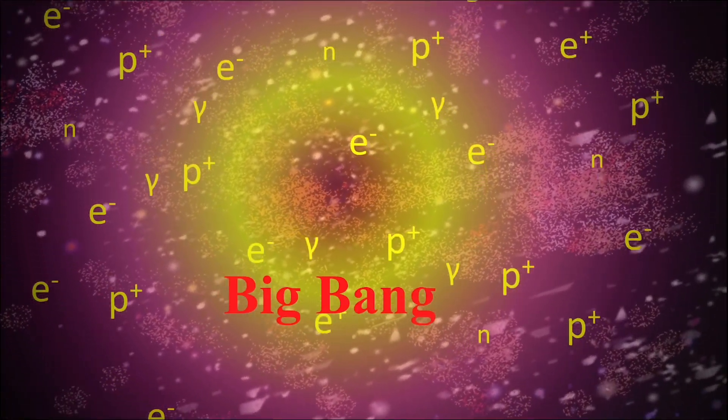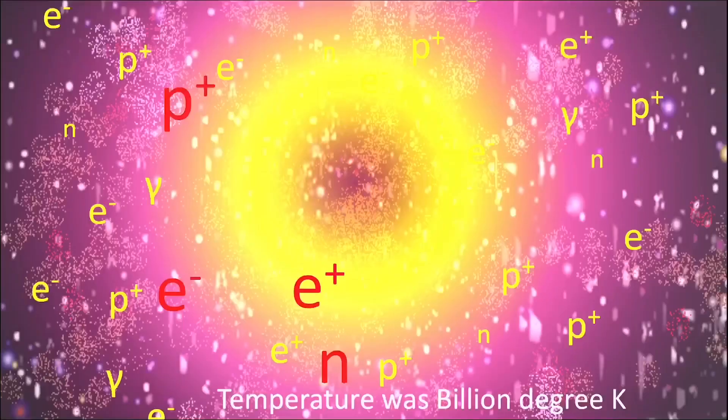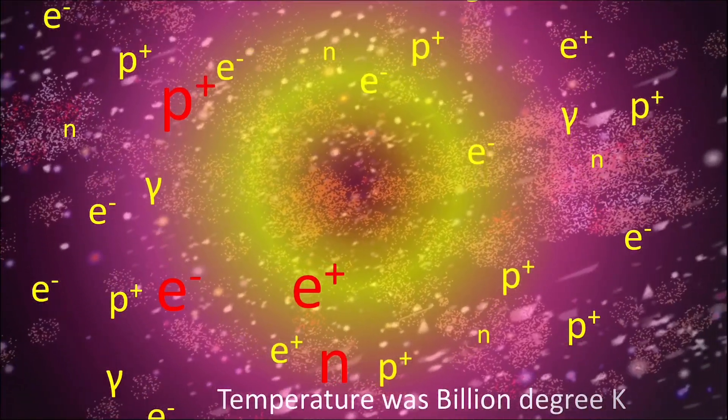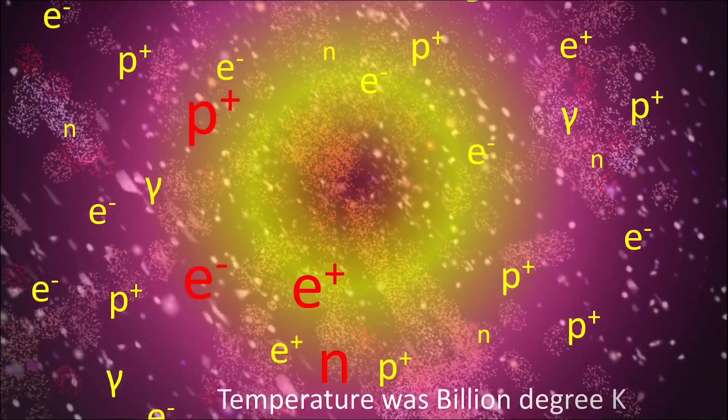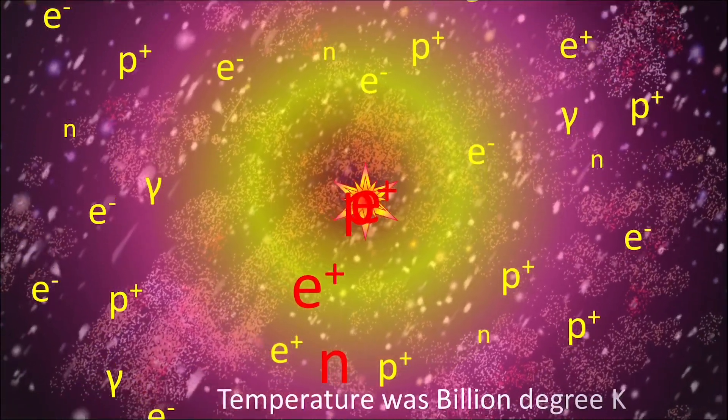In the first second of the Big Bang, the collision between proton and electron formed the neutron, and the collision between neutron and positron formed the proton again to balance the proton and neutron in space.